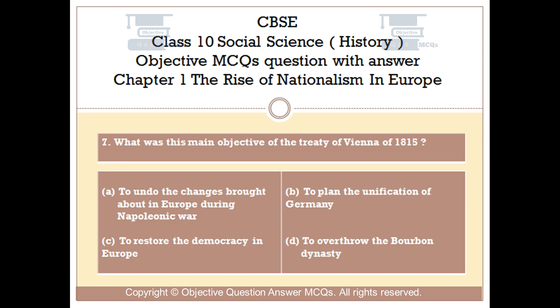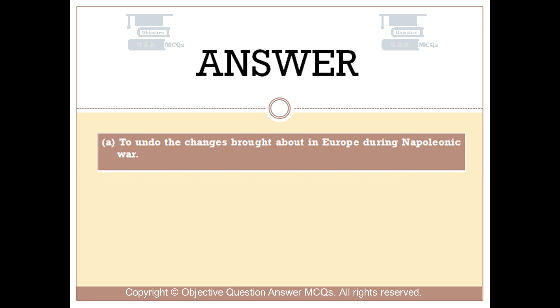Question number 7. What was the main objective of the Treaty of Vienna of 1815? Option A: to undo the changes brought about in Europe during the Napoleonic War. Option B: to plan the unification of Germany. Option C: to restore democracy in Europe. Option D: to overthrow the Bourbon dynasty. The right answer is Option A — to undo the changes brought about in Europe during the Napoleonic War.